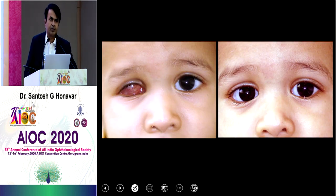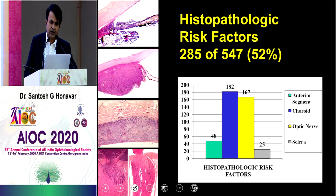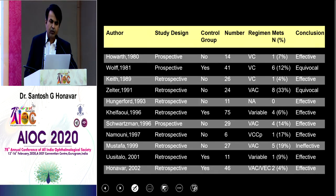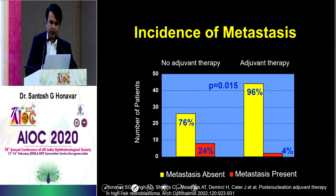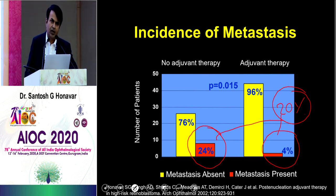When enucleation is done, you must provide a primary implant and a custom-made ocular prosthesis so that parents are satisfied cosmetically. After enucleation, look for histopathological risk factors: iris or ciliary body infiltration, major choroidal invasion (more than 3 mm thick and 3 mm in diameter), and optic nerve invasion beyond the lamina cribrosa — present in about 55% of Indian eyes that undergo enucleation. In such patients we give adjuvant chemotherapy. Without it, there is 24% mortality; with it, only 4% mortality — saving about 20% more children. Currently we have about 95 to 99% life salvage in retinoblastoma.